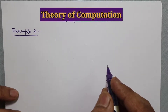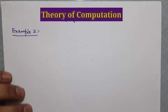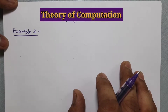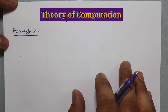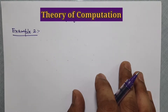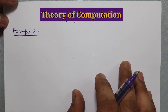Hello my dear friends, welcome to Theory of Computation lecture series. In the previous video we have seen the steps for converting a regular expression to a finite automata and some very basic examples of the same. Now in this video we are going to see two more examples of RE to FA, that is regular expression to finite automata conversion.